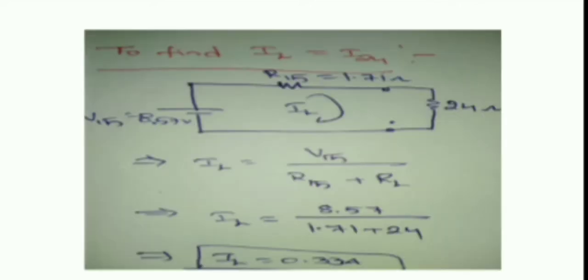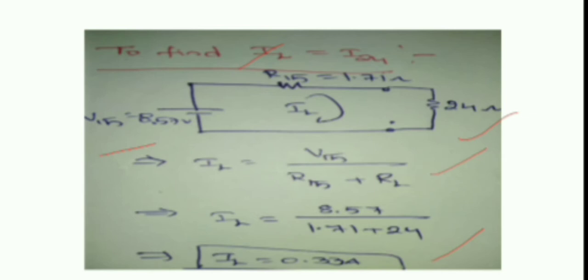In Case 3, you need to find the IL value. Replace V_Thevenin and R_Thevenin values in the circuit, and reconnect the 24-ohm load resistor. IL is equal to V_Thevenin divided by (R_Thevenin + RL). Then IL is equal to 0.33 amperes. In this way you can find Case 1, Case 2, and Case 3: in Case 1 find V_Thevenin, in Case 2 find R_Thevenin, and in Case 3 find IL.